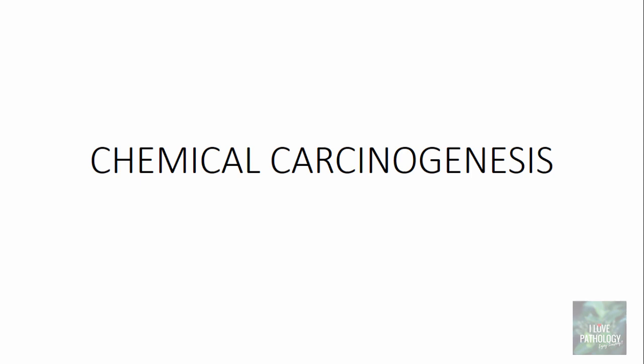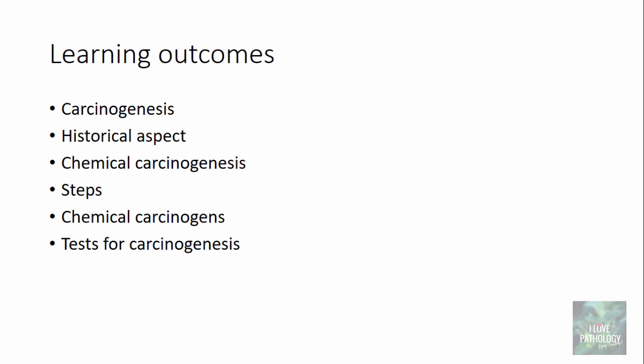Hello friends, welcome to the short tutorial from ILO Pathology. Today's topic is chemical carcinogenesis. The learning outcomes for today's topic include understanding what carcinogenesis is, looking into the historical aspect of carcinogenesis, understanding chemical carcinogenesis with the steps involved, listing out various chemical carcinogens, and knowing what tests we do for carcinogenesis.